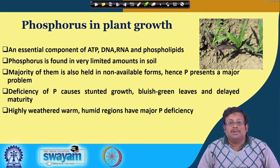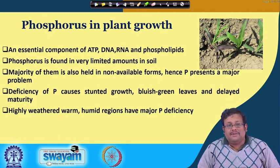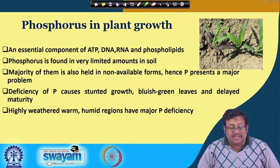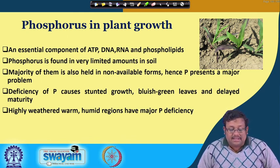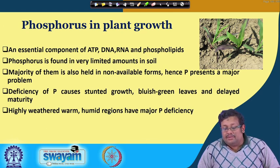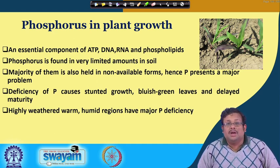Phosphorus presents a major problem because the majority of phosphorus present in soil is fixed by different chemicals. Most of the available phosphorus is inaccessible to the plant. Deficiency of phosphorus is also very important — because of this fixation process, phosphorus deficiency causes stunted growth, bluish-green leaves, and delayed maturity, as shown in the picture.